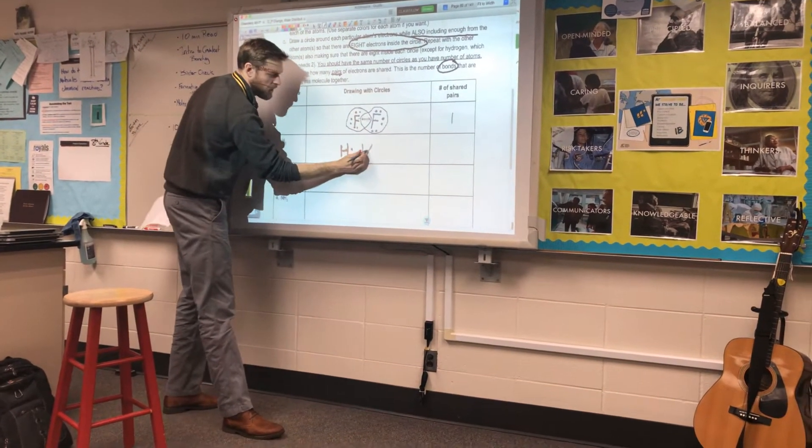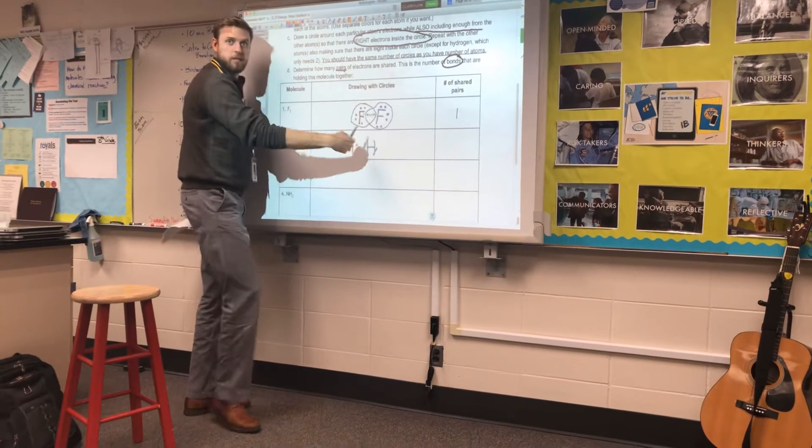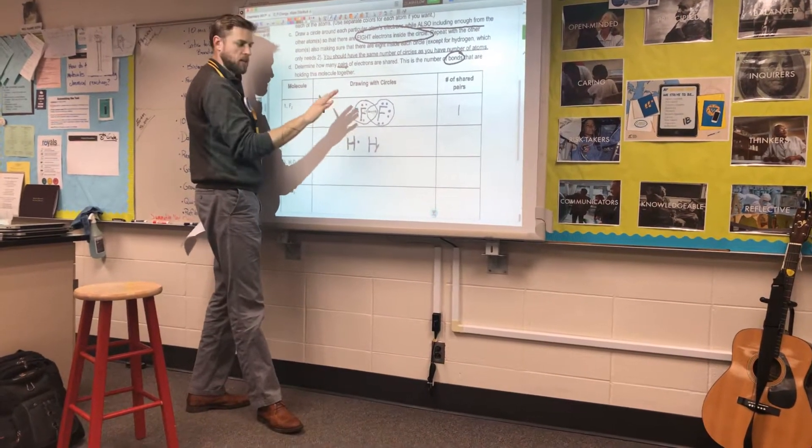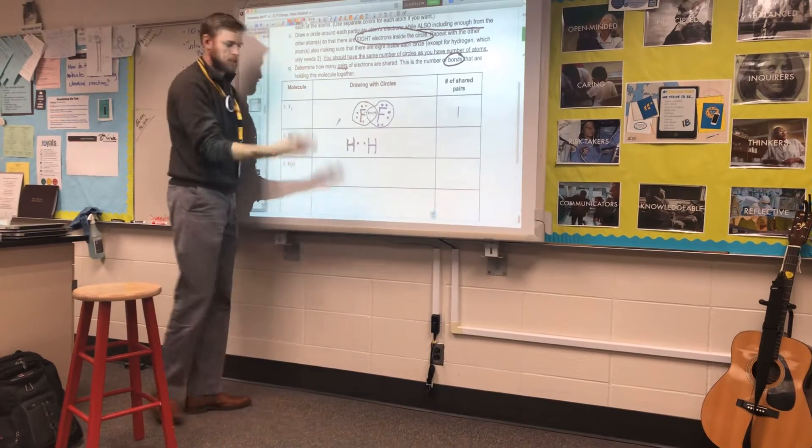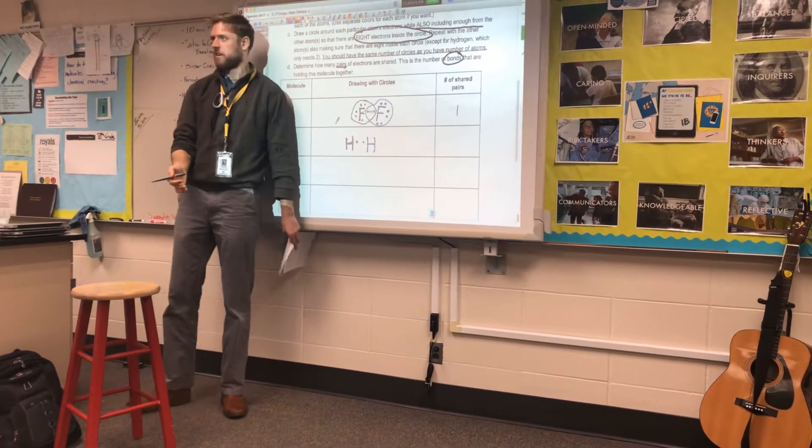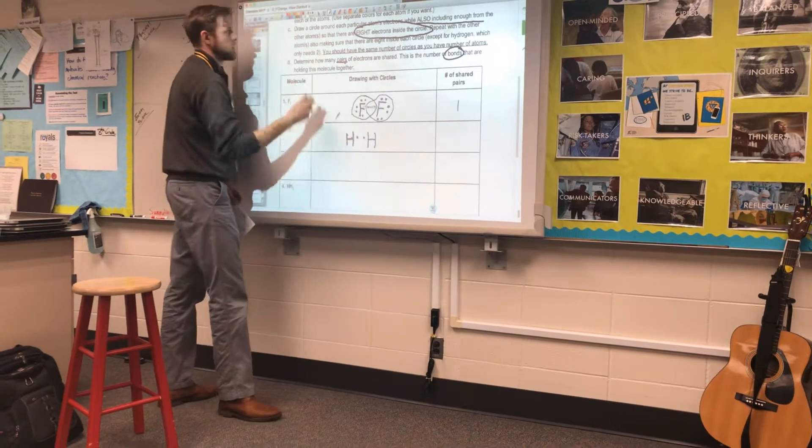And we'll draw our other hydrogen next to it. Remember, can we rotate the hydrogen to face the valence electron, like the open electron? Can we do that? That's going to make it way easier to draw the circles, right? You don't need to have your circles looping all the way around the outside.